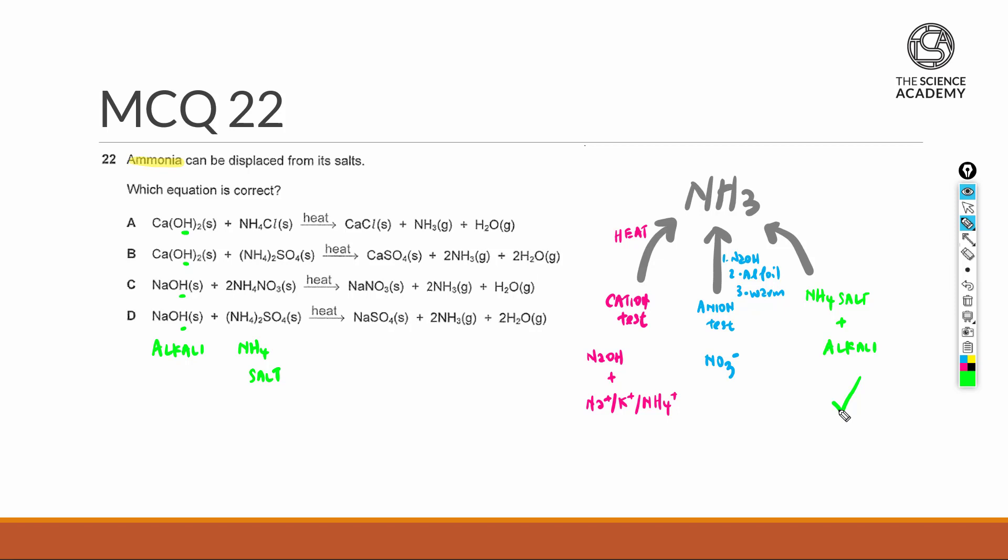Next is looking at the formula of the salts to make sure they are written correctly. A is out because it should have been CaCl2, and for D, it should have been Na2SO4. These are just balancing issues.